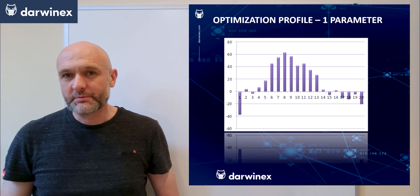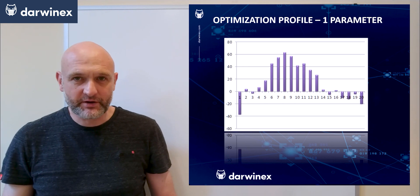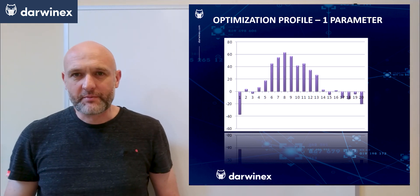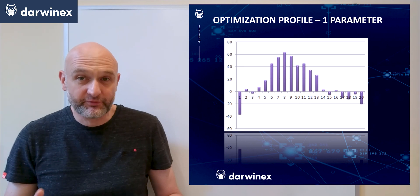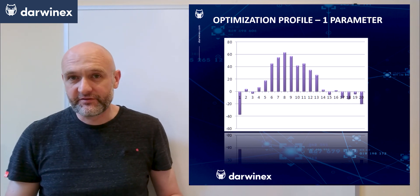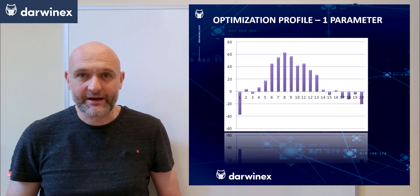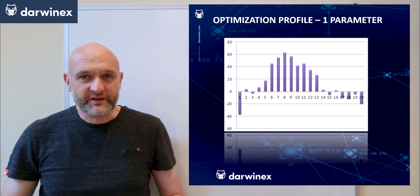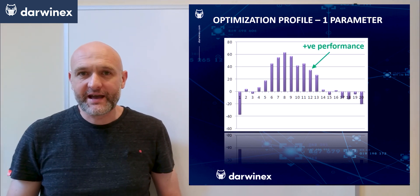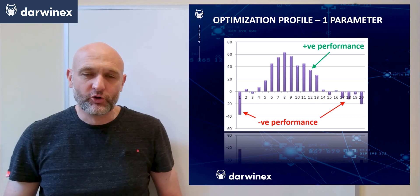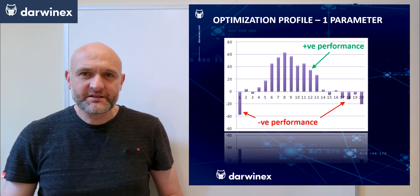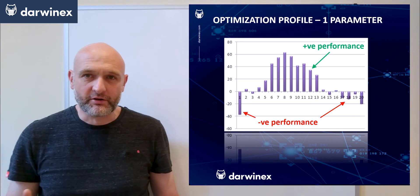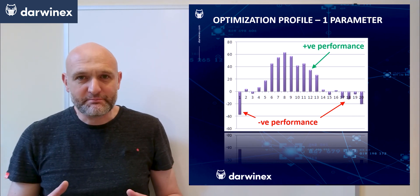So let's start by looking at a relatively simple optimisation profile of a single parameter. Each bar represents the performance of a specific parameter value, and the size of each bar represents the value of your chosen performance metric — be that profit factor, growth over maximum drawdown, or whatever you choose to use. Obviously positive performance is above the x-axis, and negative performance is below.